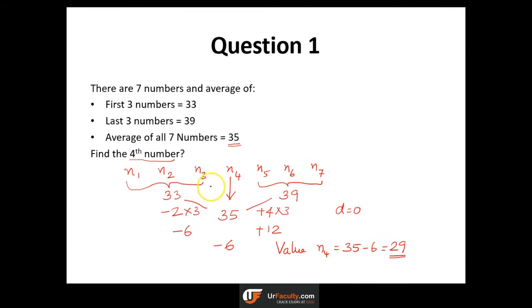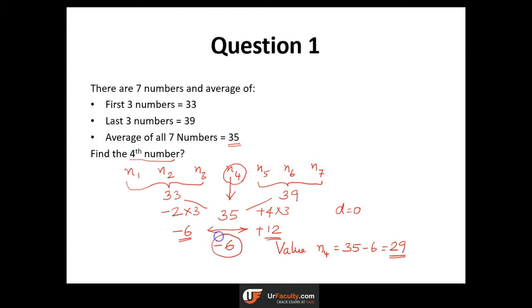To explain again: the left side has a deviation of minus 6 and the right side has plus 12. There is one missing number N4 that needs to compensate for this. The required deviation is minus 6, so we subtract 6 from the average value of 35, giving N4 equal to 29.